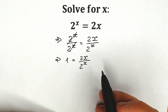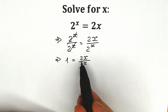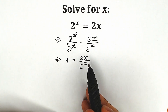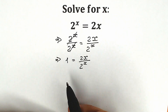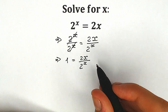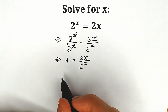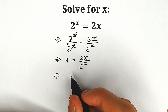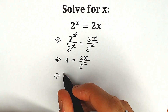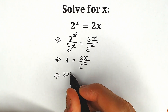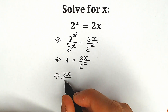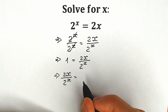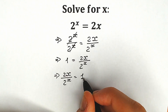For better understanding, let's swap positions, because we prefer constants on the right side and variables on the left side — it changes nothing. So as a result we have 2x over 2 to the power x on the left side, equal to 1.